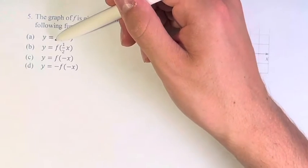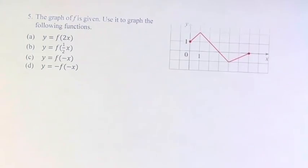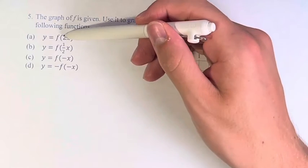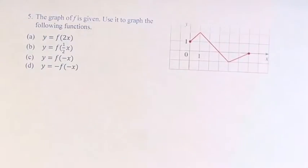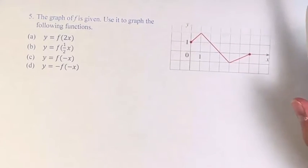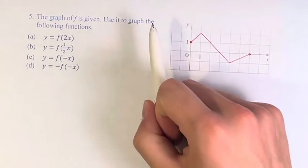So first we have y equals f of 2x. So this is shrinking horizontally by a factor of 2. So what that means is that the x values of all these points are shrunk in half.